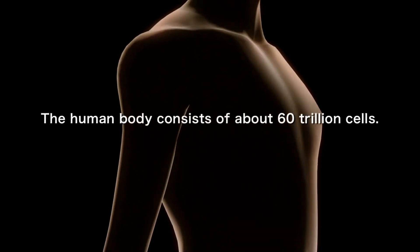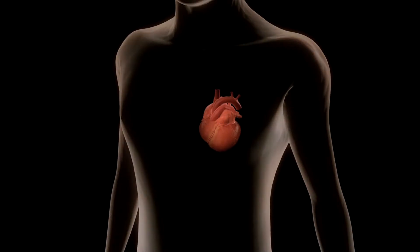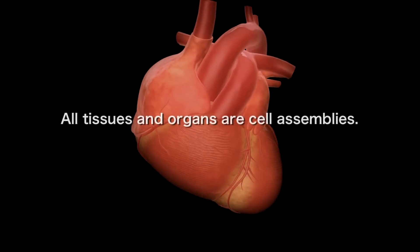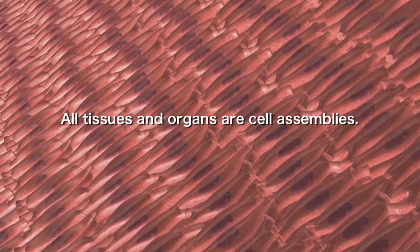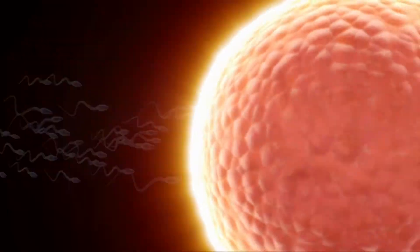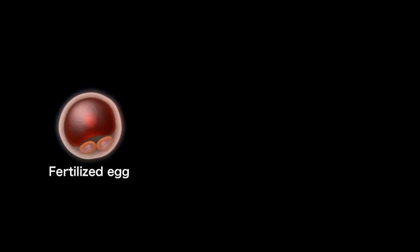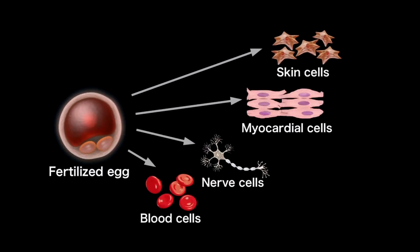The human body consists of about 60 trillion cells, and all tissues and organs are cell assemblies. It all begins with one fertilised egg, which divides repeatedly and changes into various types of specialised cells to form tissues and organs. These processes to determine the roles of cells are called differentiation.